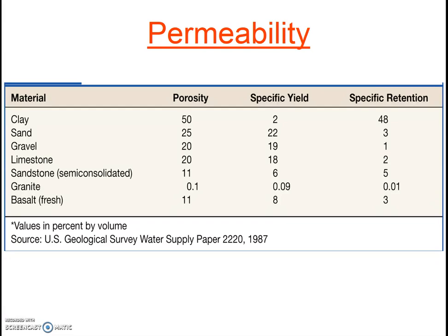This chart shows permeability in the column called specific yield. Clay has a very low permeability because it doesn't yield as much water — less water would flow through that tube. Notably, hydraulic gradient can be easily calculated, but usually we have to estimate permeability values because the subsurface is generally not uniform over large distances.